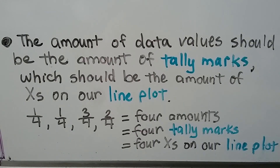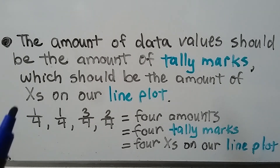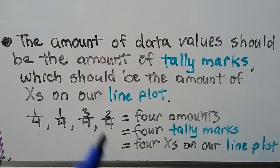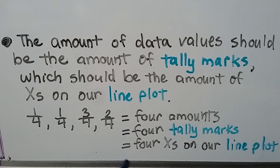The amount of data values should equal the amount of tally marks, which should equal the amount of X's on our line plot. If we have data as one-fourth, one-fourth, three-fourths, and two-fourths — that's 4 amounts — we're going to have 4 tally marks and also 4 X's on our line plot.